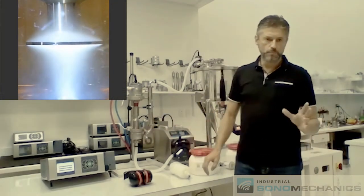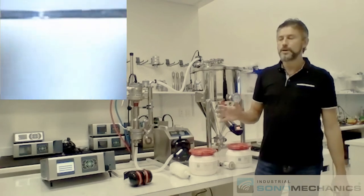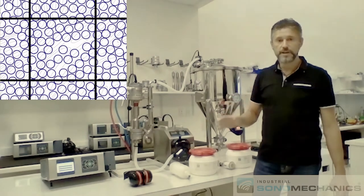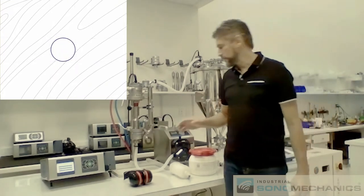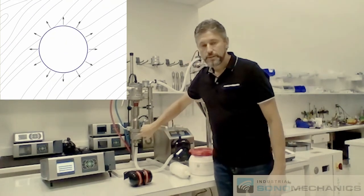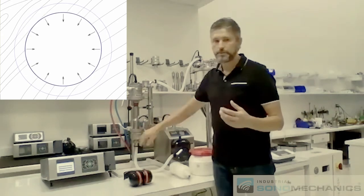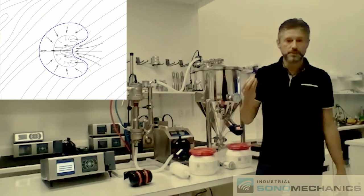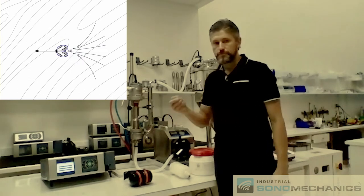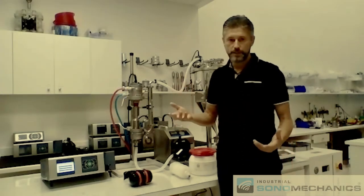Typically, 100 microns is a bit too much. So you normally would operate at about 80% of that value, which is about 80 microns peak-to-peak. This cavitation is the force behind the process. That's what's responsible for the creation of the extremely small droplets of oil suspended in water, which is the nanoemulsion.